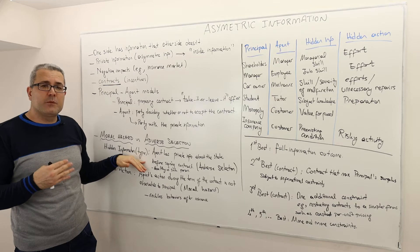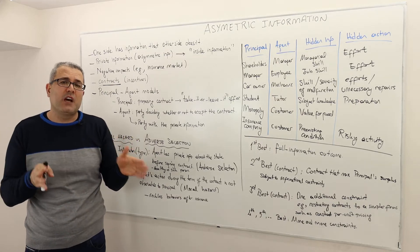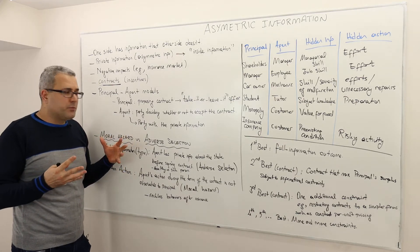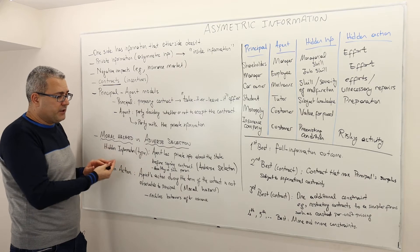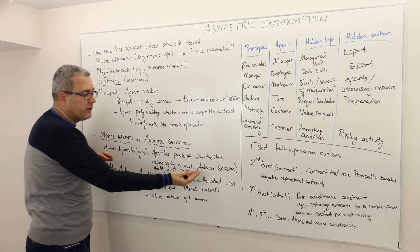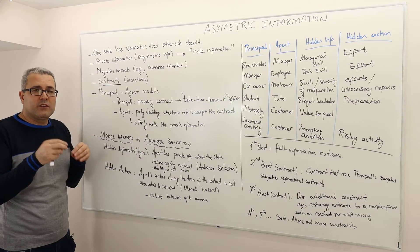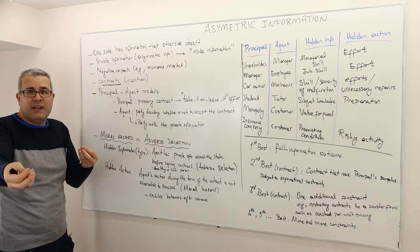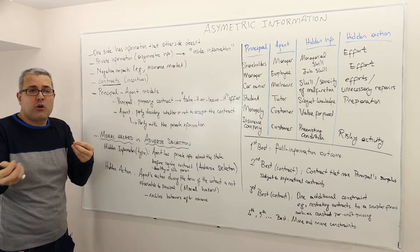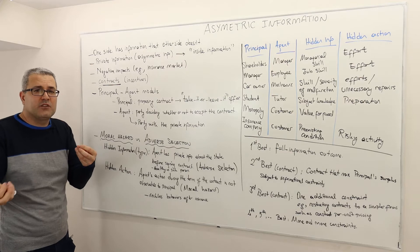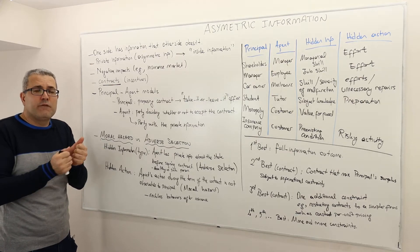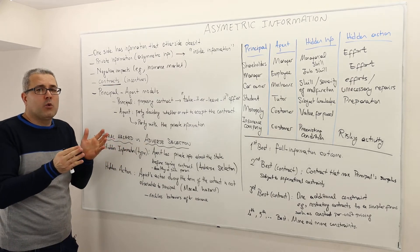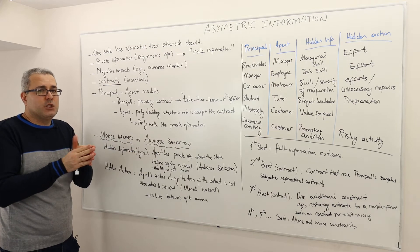Here, the principal cannot distinguish the true type of the customer. Because of the lingo used in the insurance market, the hidden information scenarios are also called adverse selection. So the principal writes a contract, prepares a contract for, for example, healthy individual and probably a different contract for people who have pre-existing condition. But as a principal, you cannot really force them to buy one contract because you can't know which customer is what type.